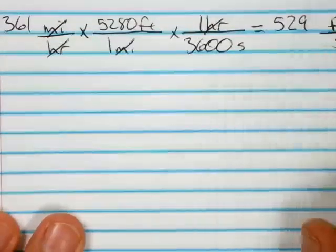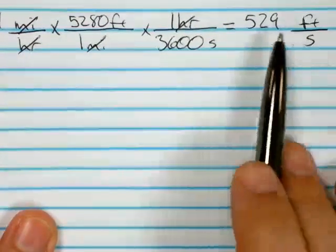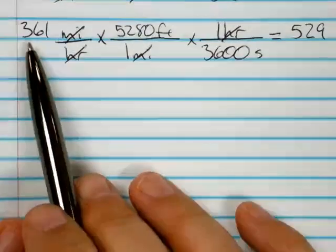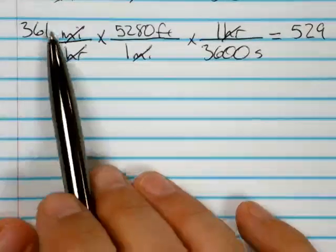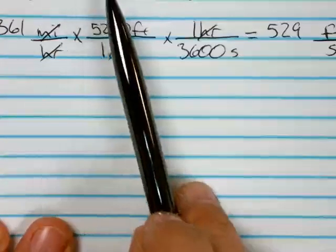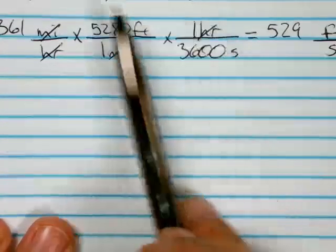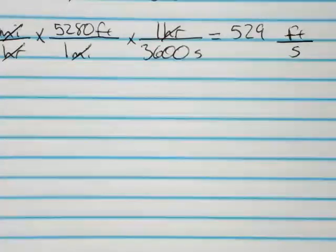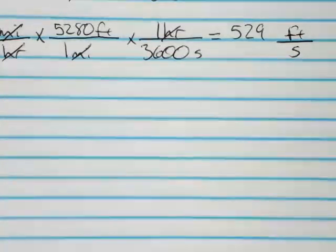We're going to go with three sig figs. Well, we're going to stick with three sig figs because our measured quantity that we began with here, three sig figs. Conversion factor, conversion factor, so we're going to stick with the measured quantity. So 529 feet per second, that's your answer.